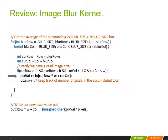We will be using the image blur kernel to illustrate the importance of memory access efficiency. The arrow points to the most important statement in terms of execution time in the image blur kernel. It is within a doubly nested for loop, and with each iteration of that inner loop, this statement will be accessing one input element and accumulate the input element value into the pixel value variable. This leads to a ratio of one memory access per floating point addition operation.